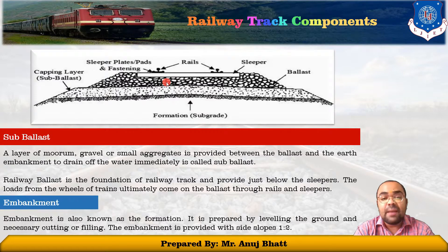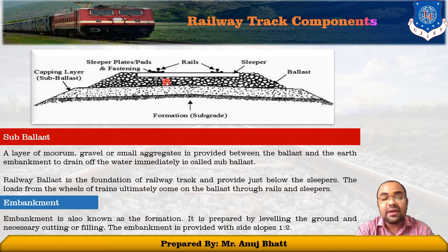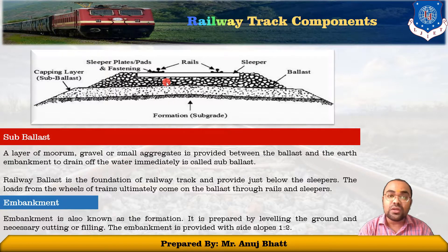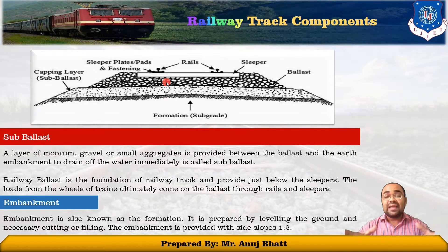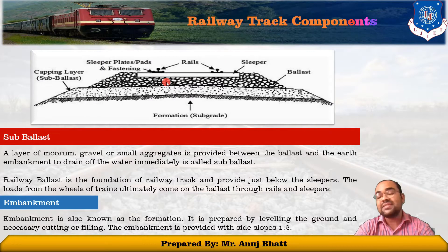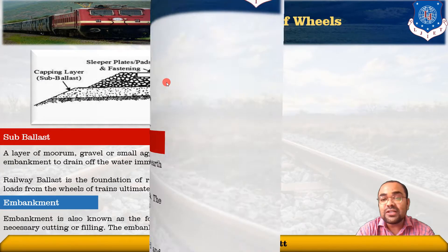Then after sub-ballast comes the embankment, also known as formation, which is prepared by leveling the ground and if necessary by cutting or filling that ground. The side slope provided to the embankment is 1 in 3. So these are the main components from which a track is established: rails, sleepers, ballast, sub-ballast, and embankment. Remember these components and their functions. Now let's discuss one of the important topics: the conning of wheels.